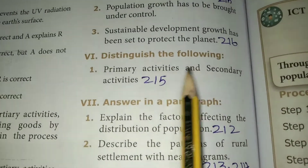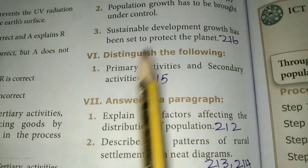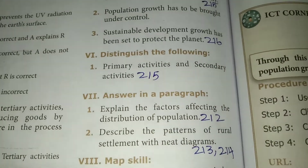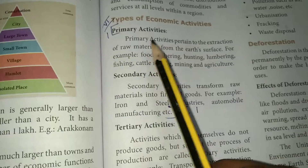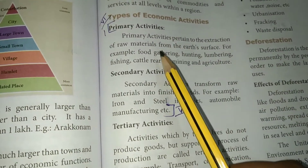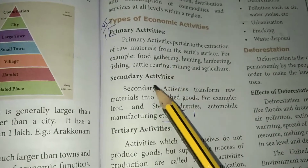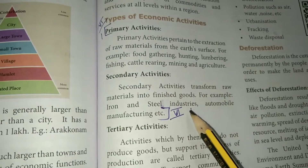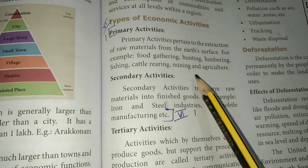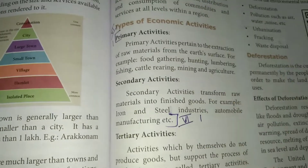Distinguish the following. First: Primary activities and secondary activities. Take page number 215. Under the heading 'All types of economic activities,' mark primary activities and secondary activities. This forms the answer for the first distinction question.